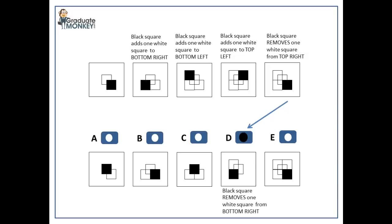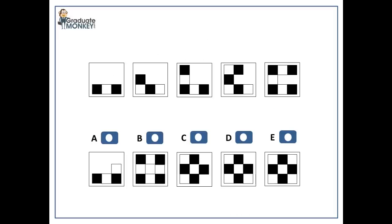The next example will be a similar type of sequence with variation in pattern formation. On this slide, you can see a series of patterns that contain black and white squares. Notice that the number of squares increases from one pattern to another, and any two black-colored squares are separated by a white square. Imagine you are looking at a snake with black and white spots that is entering from the bottom right part of the larger square and moving up clockwise. The snake's head consists of a black square. In the first pattern, you see only a part of the snake's body. In the second pattern, it glides one step further so you can see more of it. In the third pattern, it moves one more step to the top of the larger square and so on.